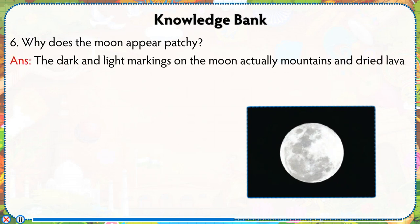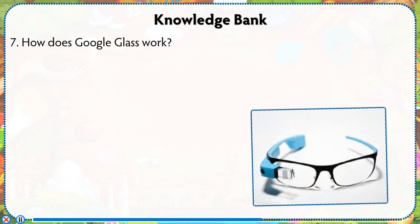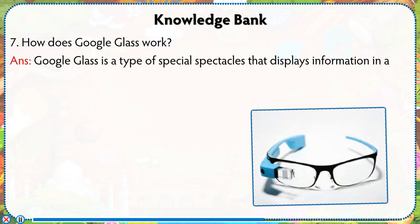Why does the moon appear patchy? The dark and light markings on the moon are actually mountains and dried lava beds present on its surface. Lava material is darker than the mountains, therefore the moon looks patchy.